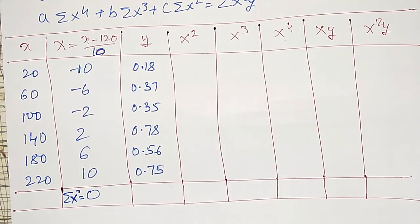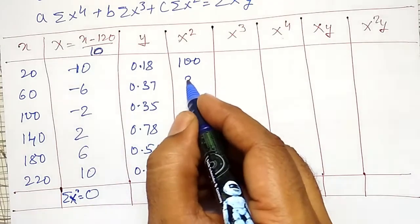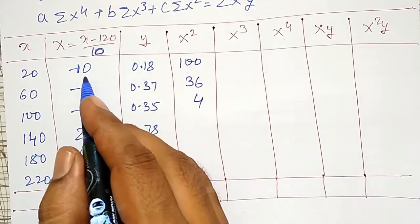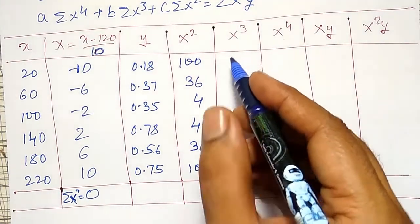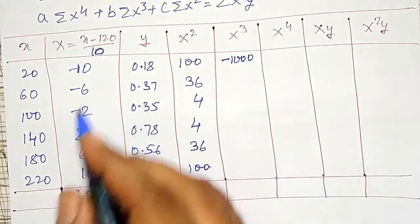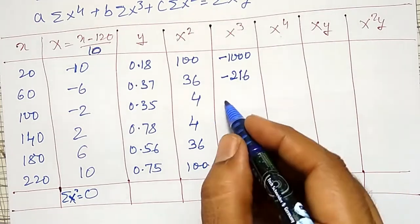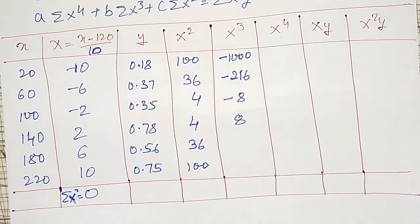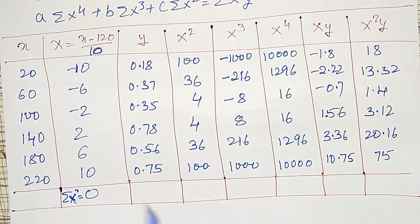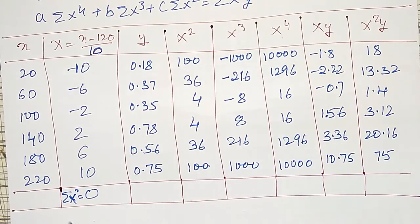The sum of small y I will calculate at the end. For the X² column: 100, 36, 4, 4, 36, 100. For X³: −1000, −216, −8, +8, +216, +1000 — note the negative cubed is still negative. I have prepared the full table with columns for X², X³, X⁴, XY, and X²Y.